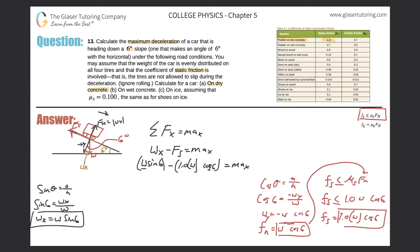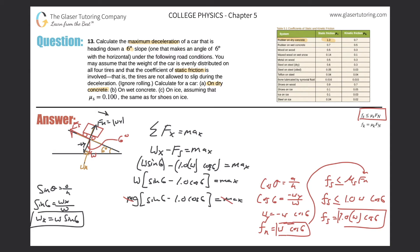Now I have w in common in both terms, so I'll pull it out. So I have: w times (sine of six minus 1.0 cosine of six) equals ma sub x. Expanding w to mg — because w equals mg — I now have: mg times (sine of six minus 1.0 cosine of six) equals ma sub x. The m's cancel. So we simply have: g times (sine of six minus 1.0 cosine of six) equals a sub x. Remember, that 1.0 was simply mu sub s. When I do parts B and C, I'll just change out that number.